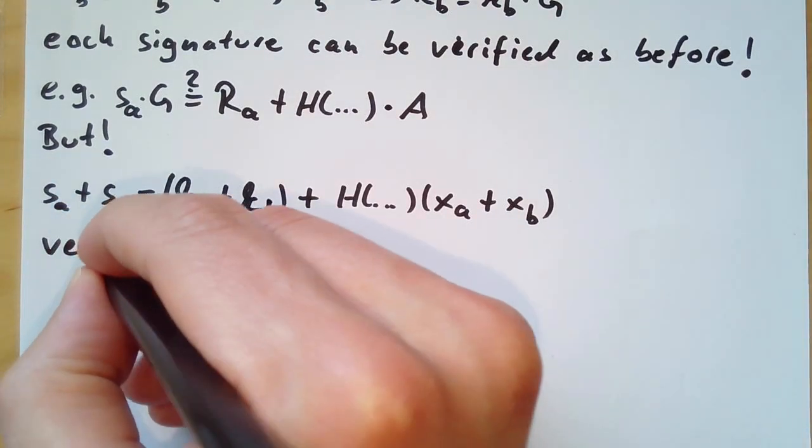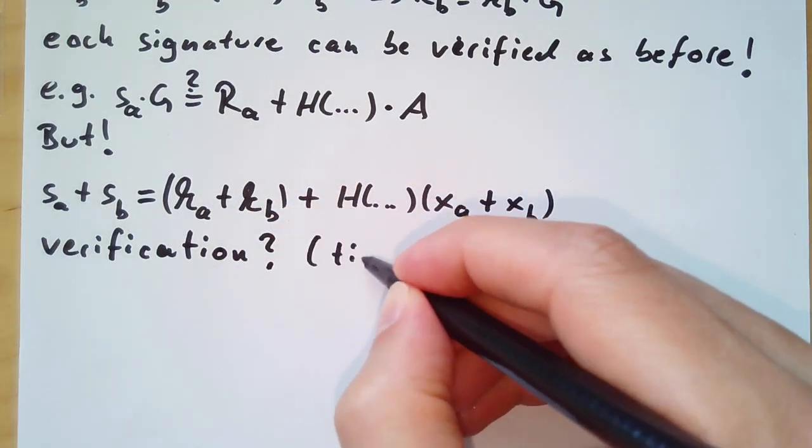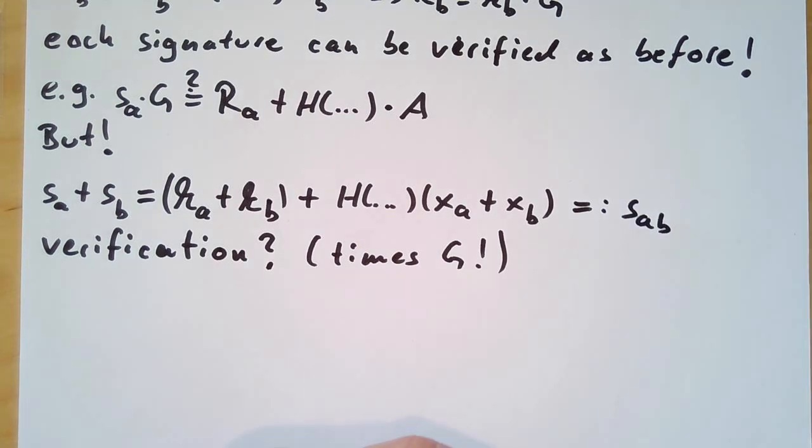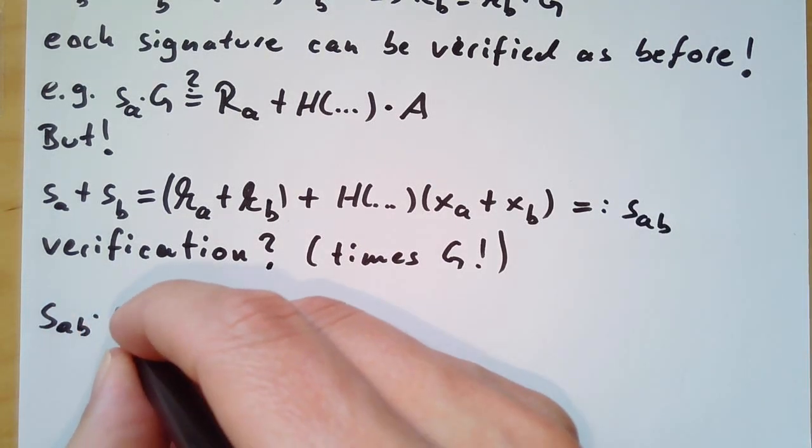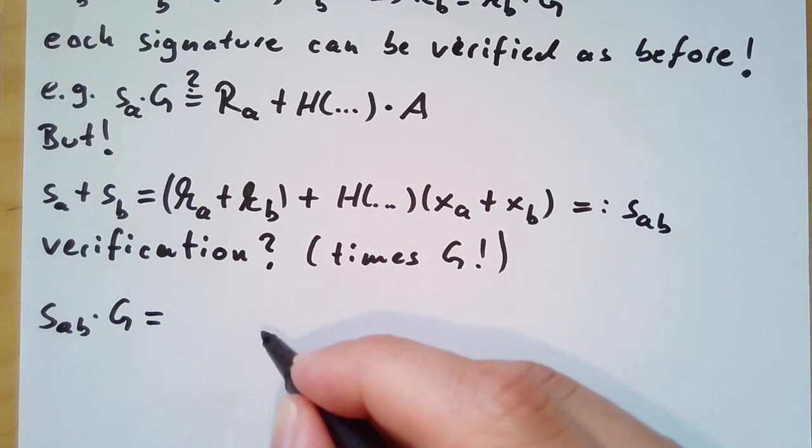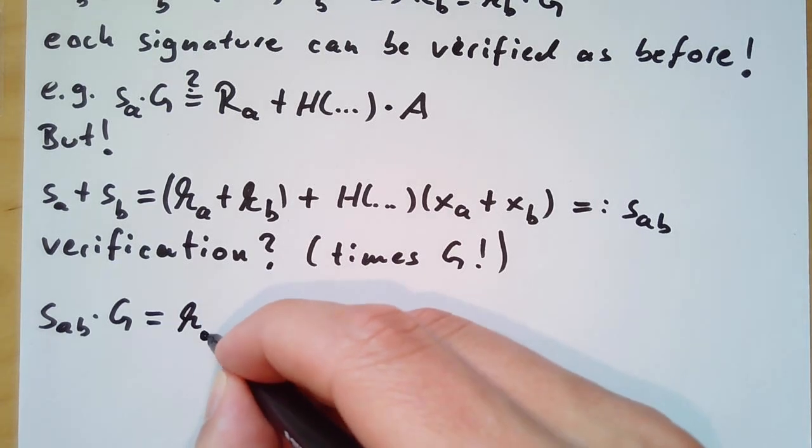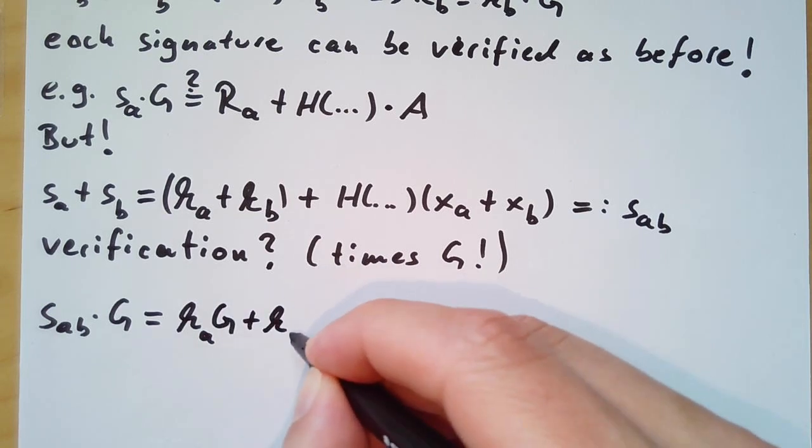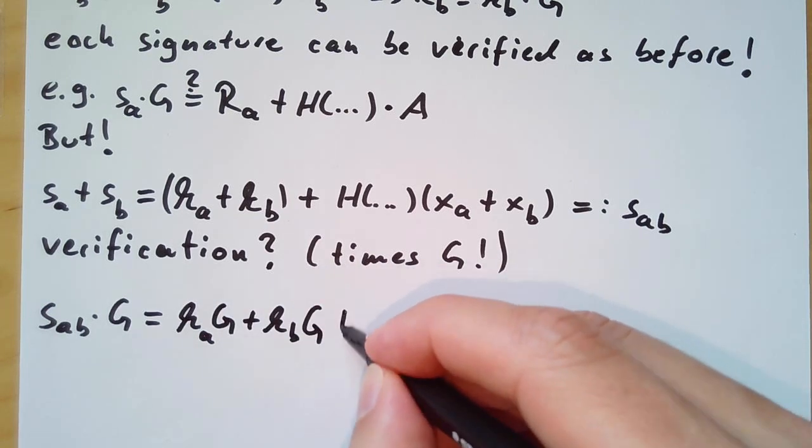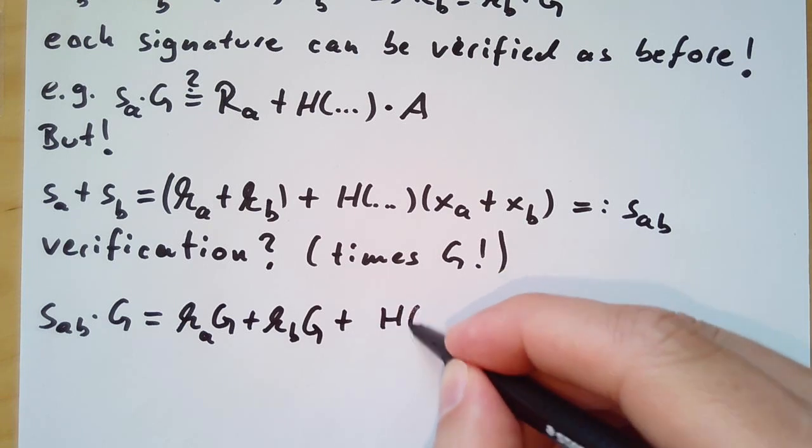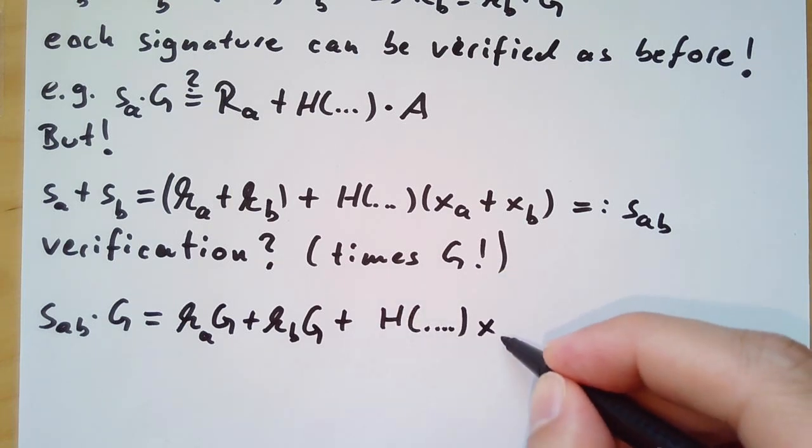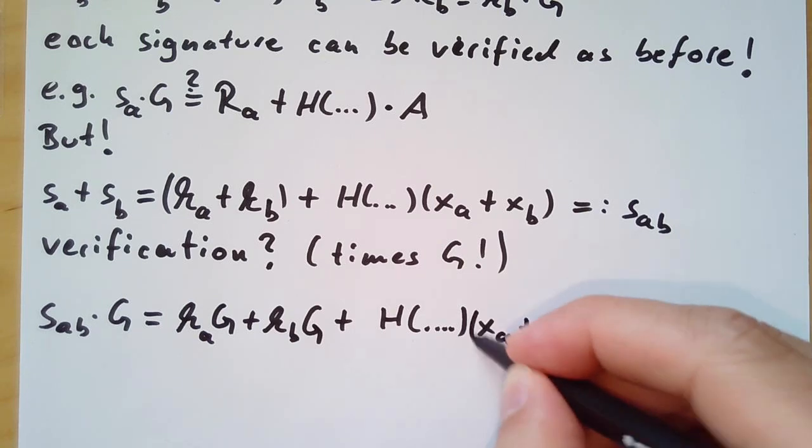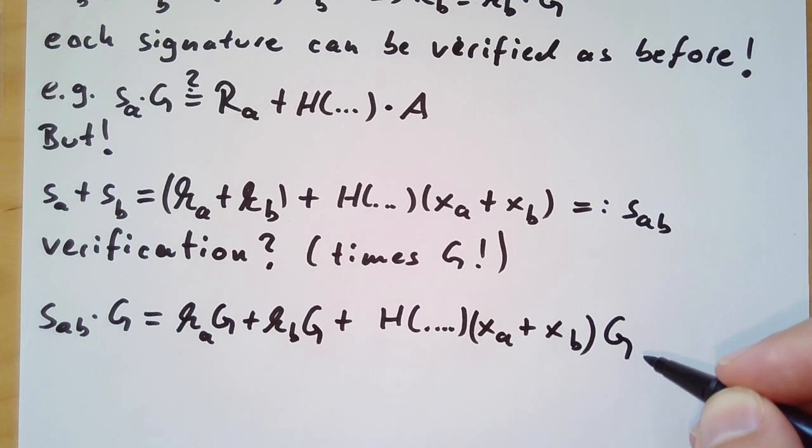We can look what the verification equation would look like by multiplying this entire equation with the generator point G. So let us give a name to the combined signature - it's called SAB - and multiply SAB times our generator point. The way how we do this is we have to multiply each term: KA times G plus KB times G. And the third term is actually just the product. So we keep the hash function and the sum of the private keys which is XA plus XB, and multiply this again with the generator point G.